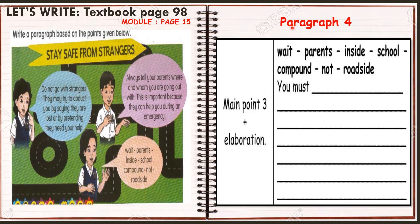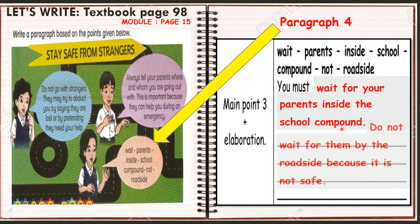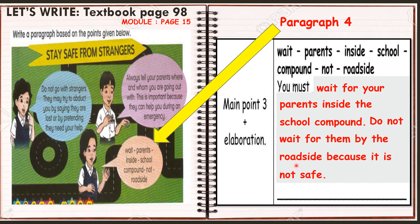Now let's proceed with paragraph 4. Look at the words given: parents, inside, school compound, roadside. So you can write: you must wait for your parents inside the school compound. And then: do not wait for them by the roadside because it is not safe. So the main point is you must wait for your parents inside the school compound, and the elaboration is do not wait for them by the roadside because it is not safe.